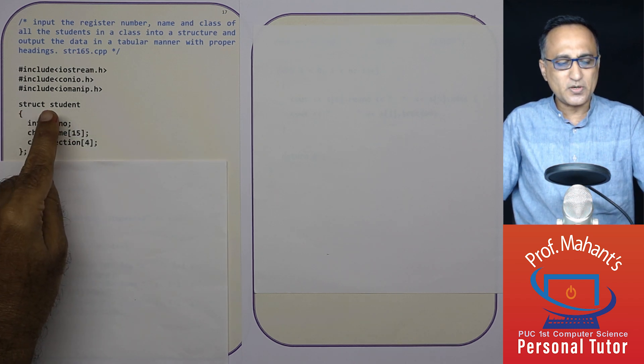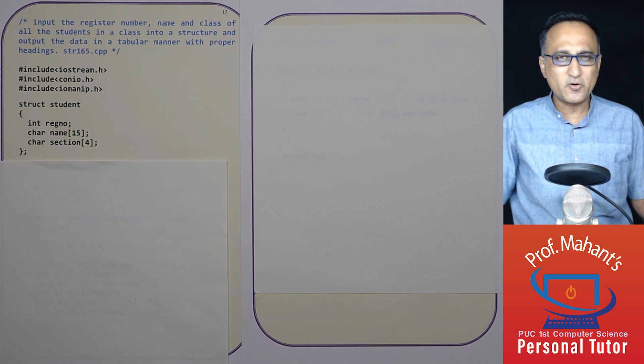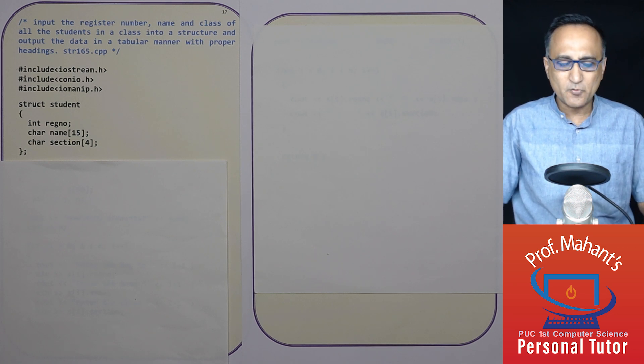I'm saying structure student, it's got register number, it's got the name and it's got the section of the student. So register number could be 100, 101, and so on. Name could be Ram, Sham, Suhana, whatever it is.